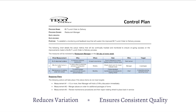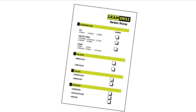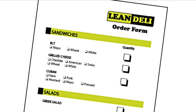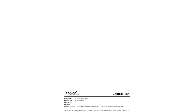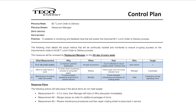For a better understanding of control plans, let's go back to our example of a BLT order process from the previous DMAIC videos. We made an improvement to the BLT lunch order process by creating a standard order form that serving staff uses to jot down customers' orders. This was done to help ensure that the orders were taken down accurately and to prevent delays in serving the customer.